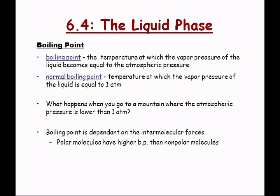Remember, evaporation and boiling are two different things. Evaporation occurs below the boiling point. The boiling point is the temperature at which the vapor pressure of the liquid becomes equal to the atmospheric pressure. The normal boiling point is when the vapor pressure equals 1 atm — that's normal atmospheric pressure. At a mountain where atmospheric pressure is lower than 1 atm, the boiling point decreases. At the top of Mount Everest, you can boil water at about 78°C instead of 100°C.